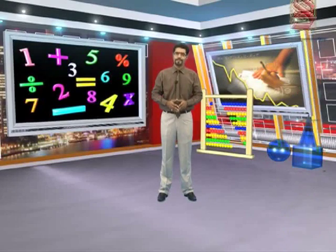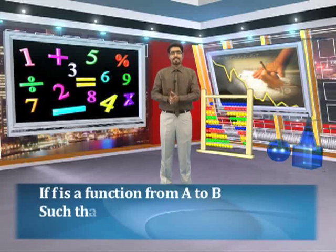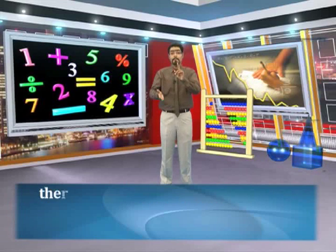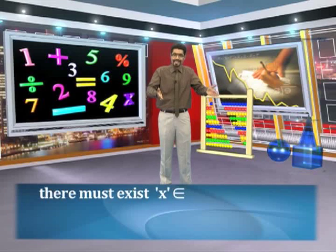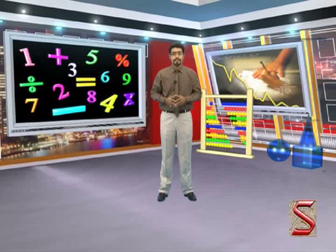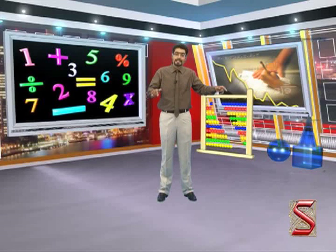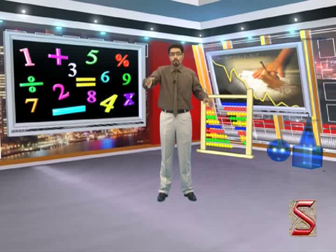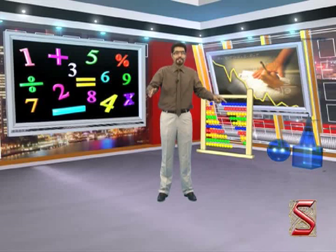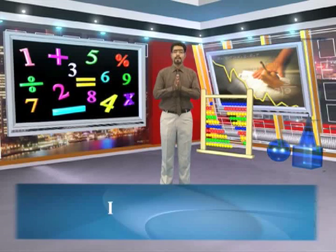Let us understand the onto function by its definition. Onto function: if f is a function from A to B such that for all y that belongs to B, there must exist an x that belongs to A such that y is equal to f of x. From this definition it is clear that all the elements of the co-domain must be the image of some element in the domain. In other words, there are no elements in the co-domain which are not an image of any element of the domain — then this type of function is known as an onto function.